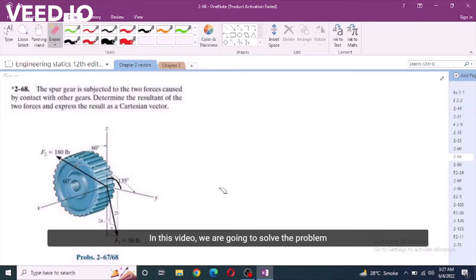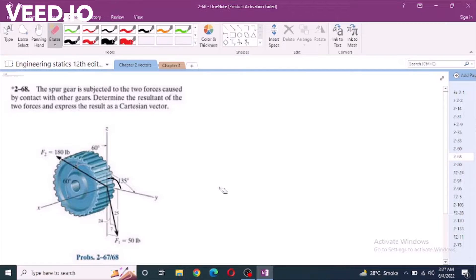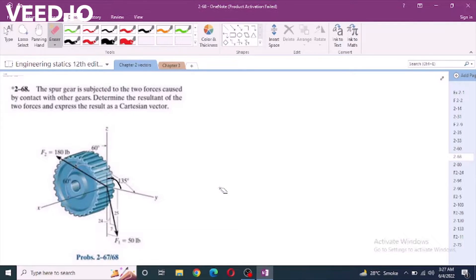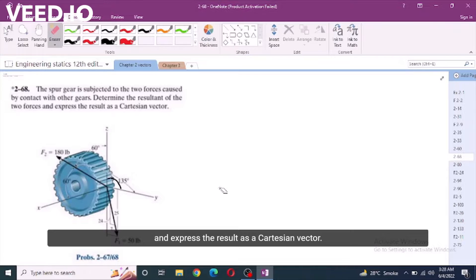In this video, we are going to solve problem 2-68 from R.C. Rebeller and Junion Statics 12th edition. According to this problem, the spur gear is subjected to two forces caused by contact with other gears. Determine the resultant of the two forces and express the result as a Cartesian vector.